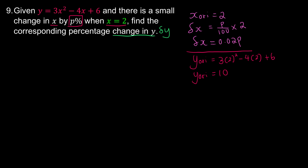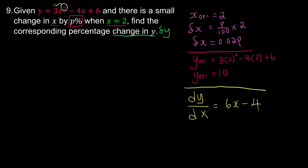After finding y original, we are going to use differentiation as our approximation tool. So we find dy over dx, which is equivalent to 6x minus 4. The exponent 2 comes down and 3 times 2 reduces by 1; similarly, 1 comes down and 4 times 1 reduces by 1. This is how we get 6x minus 4.